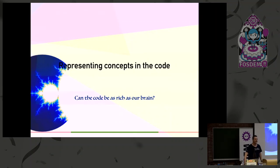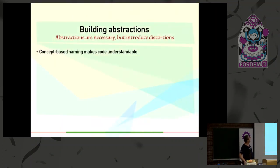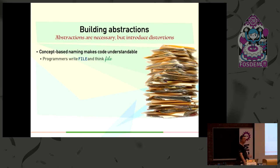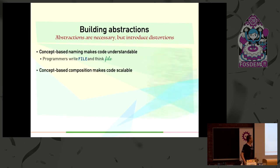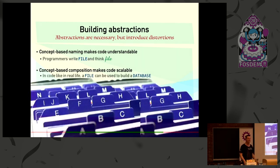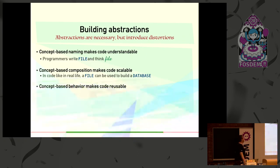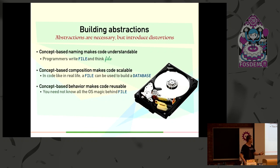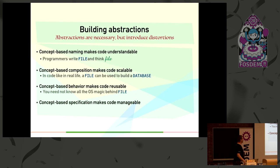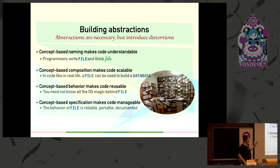Representing concepts in the code - can the code be as rich as our brains? Let's try first concept-inspired naming to make the code understandable. Programmers write file and they think file and it has the same properties. If you call it cat it doesn't work, so we all do concept programming without knowing it. That means you can do concept-based composition to make the code scalable. In code, like in real life, a file can be used to build a database. Then you can have concept-inspired behaviors to make the code reusable. You don't need to know the OS magic behind file, all you need to know is that it behaves like a file. Finally, concept-based specifications make the code manageable. The behavior of file is to a large extent reliable, portable, documented, etc.